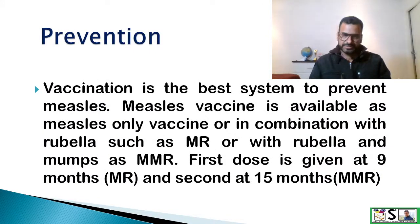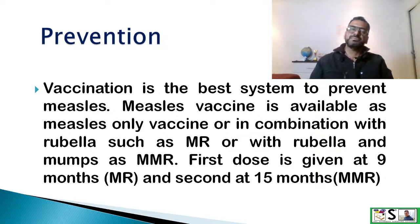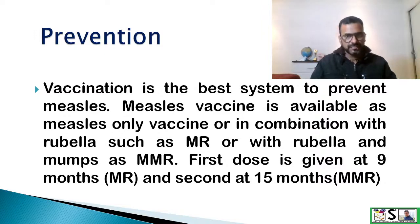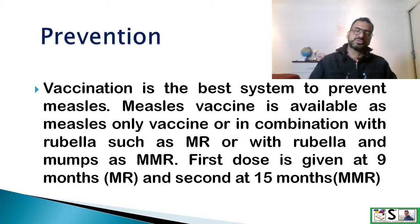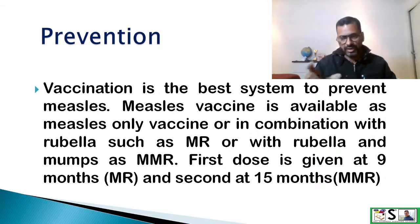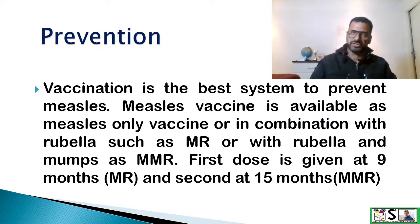How can we prevent measles? Vaccination is the best way to prevent measles. The measles vaccine is available as a measles-only vaccine or in combination with rubella as MR, or with rubella and mumps as MMR. The first dose is given at nine months as MR, and normally the second dose is given at 15 months as MMR — or if MMR is not available, the second dose of MR can be given.